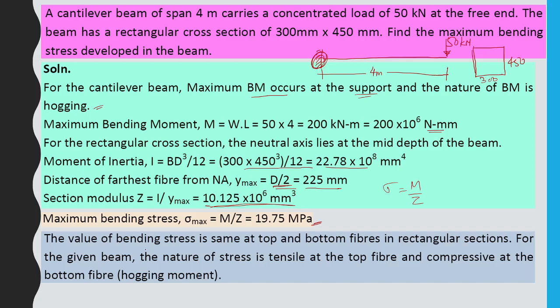Maximum bending stress σ = M/Z = 19.75 N/mm². The bending stress is the same at the top and bottom fibers for a rectangular section. For this beam with hogging bending moment, the stress is tensile at the top fiber and compressive at the bottom fiber.